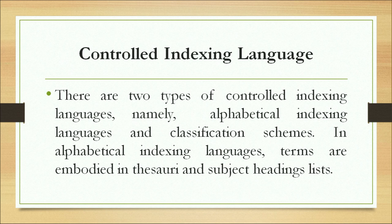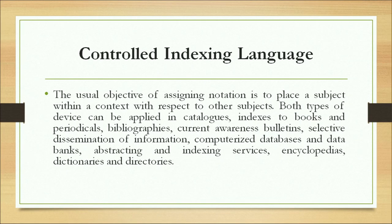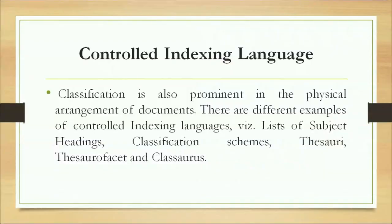There are two types of controlled indexing languages: alphabetical indexing languages and classification schemes. In alphabetical indexing languages, terms are embodied in thesauri and subject heading lists; the subject terms are alphabetical names of the subject, with control exercised over terms used. In classification schemes, each subject is assigned a piece of notation. The usual objective of assigning notation is to place a subject within a context with respect to other subjects. Both types can be applied in catalogues, indexes, bibliographies, current awareness bulletins, and selective dissemination of information.